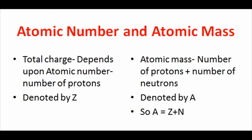Now we will discuss the concept of atomic number and atomic mass. The atomic number of a chemical element, also known as its proton number, is the number of protons found in the nucleus of an atom of that element, and therefore identical to the charge number of the nucleus. It is conventionally represented by the symbol Z. The atomic number uniquely identifies a chemical element. In an uncharged atom, the atomic number is also equal to the number of electrons.